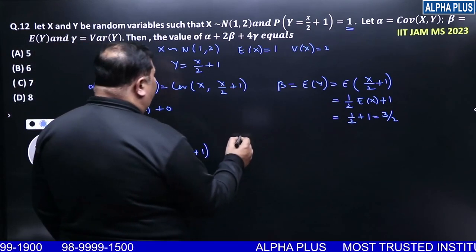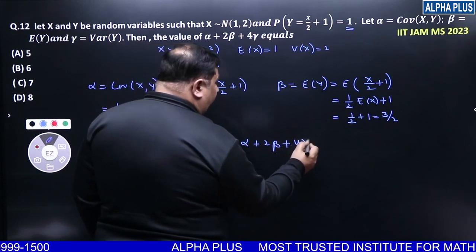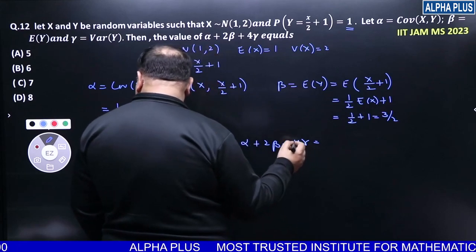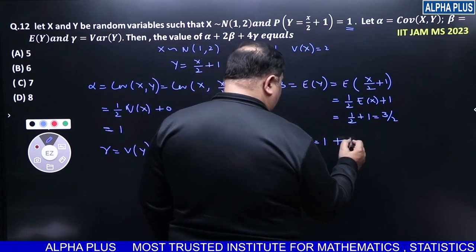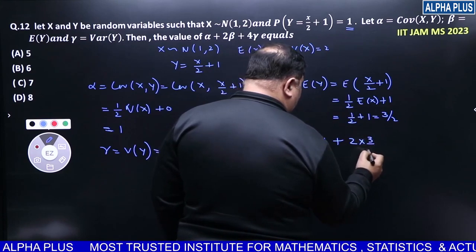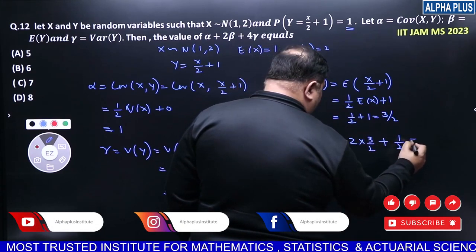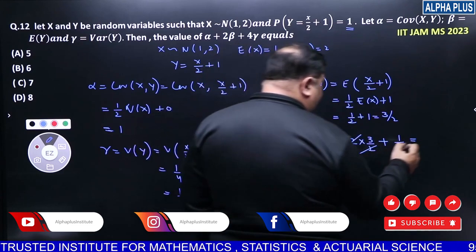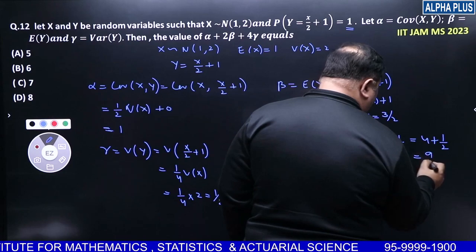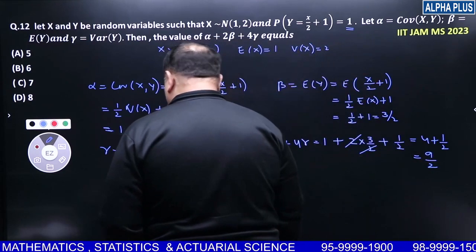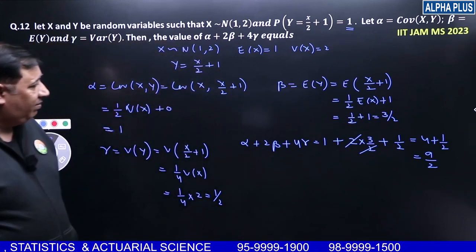Now we can find the value of alpha plus 2 beta plus 4 gamma. So, what is alpha is equal to? 1 plus 2 times beta, 2 into 3 by 2 plus gamma which is half. So, we can get 4 plus 1 by 2 which is 9 by 2. Is the answer.